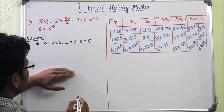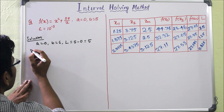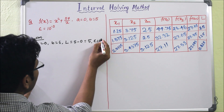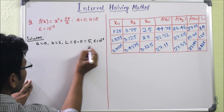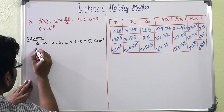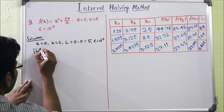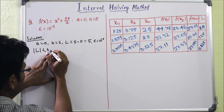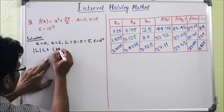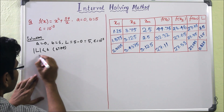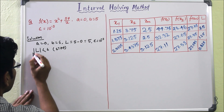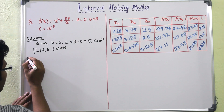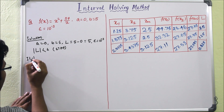The epsilon is given as 10⁻³. The role of epsilon is that when the interval length L becomes less than epsilon, we have to stop. This is the stopping criterion.